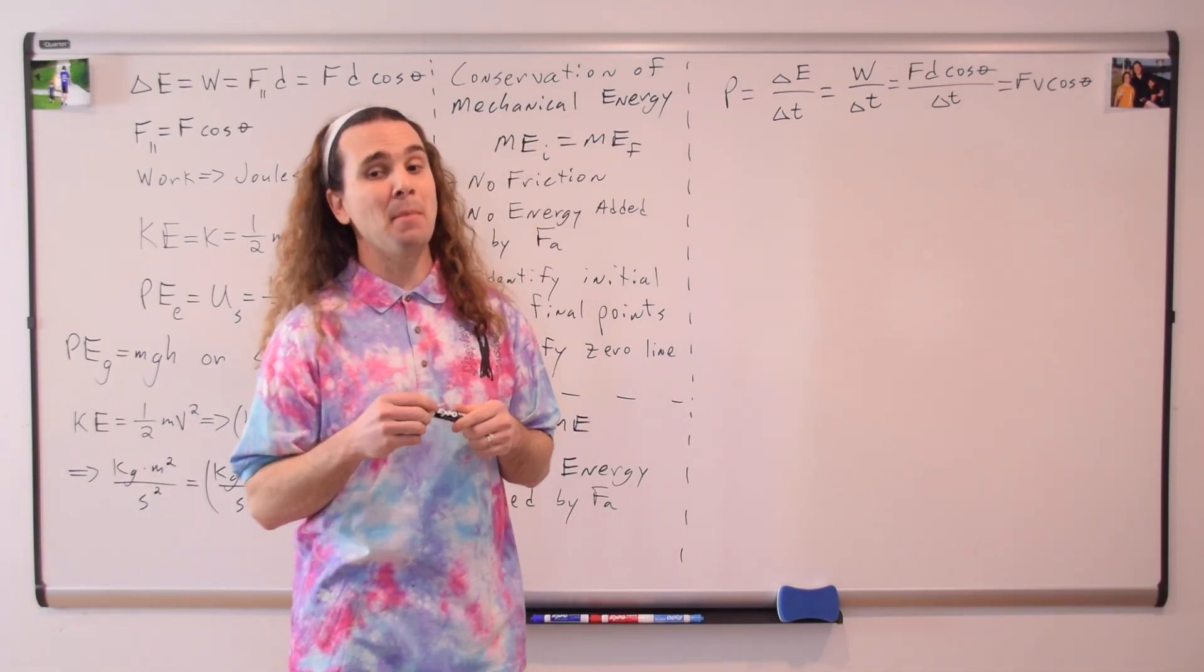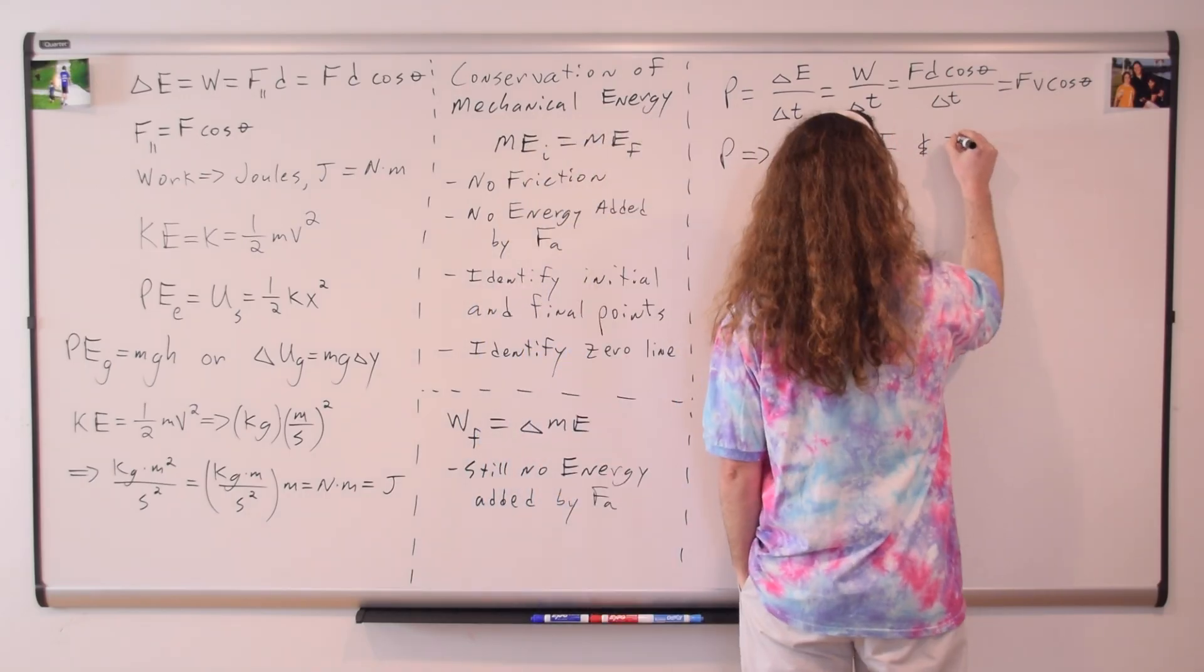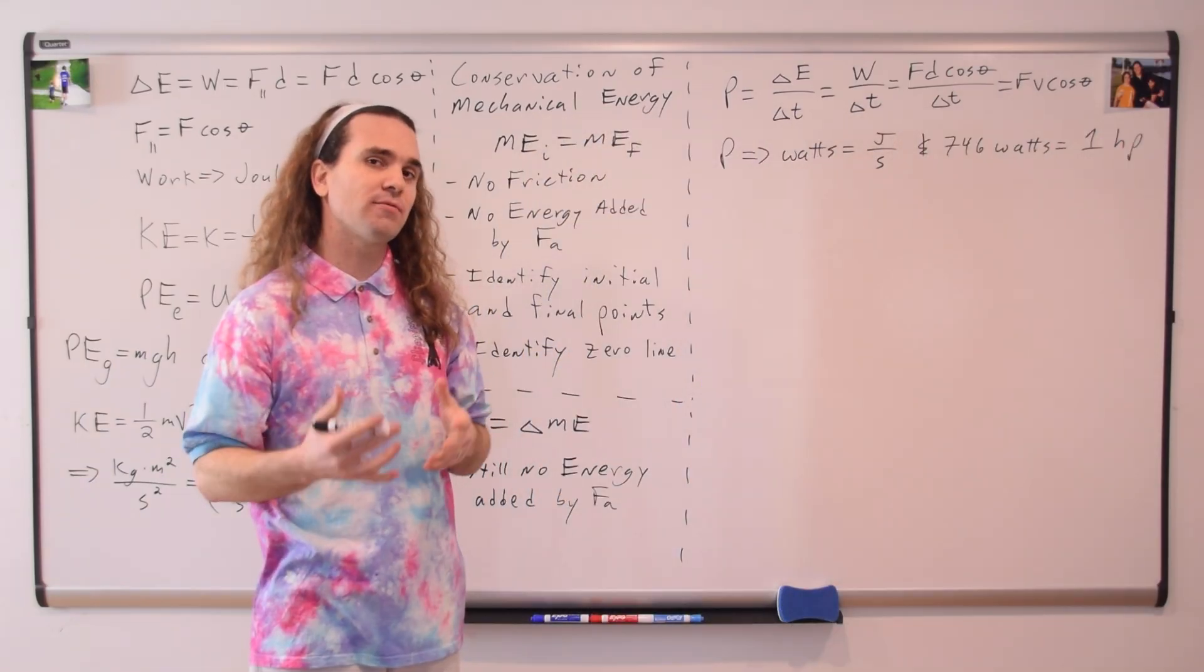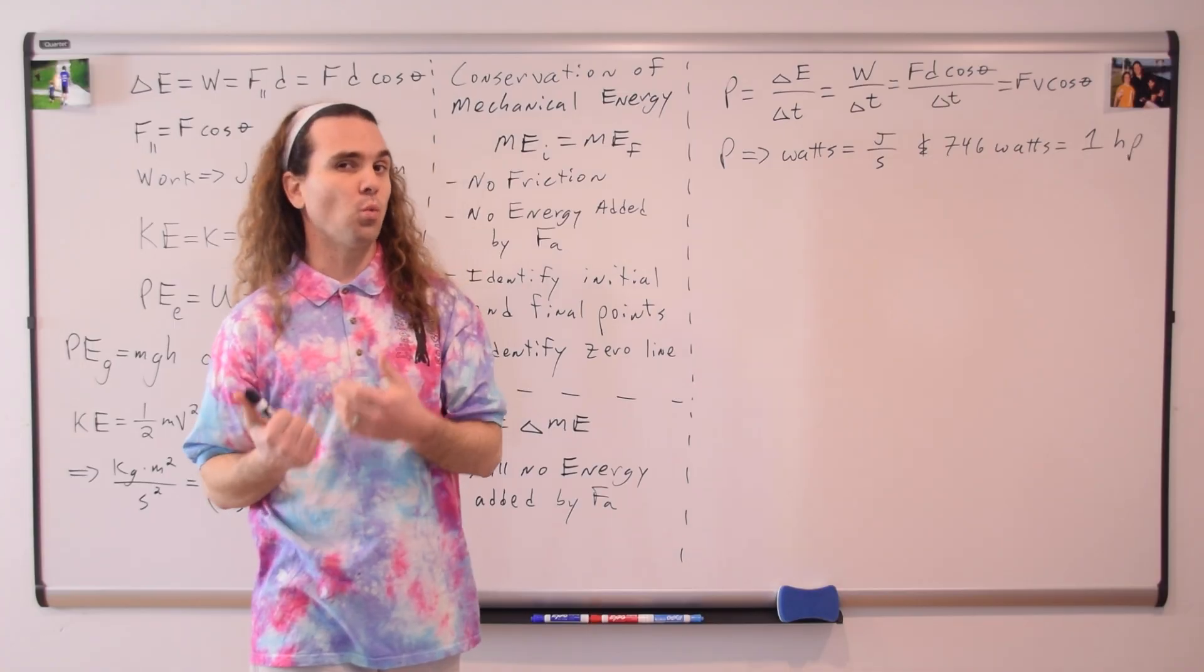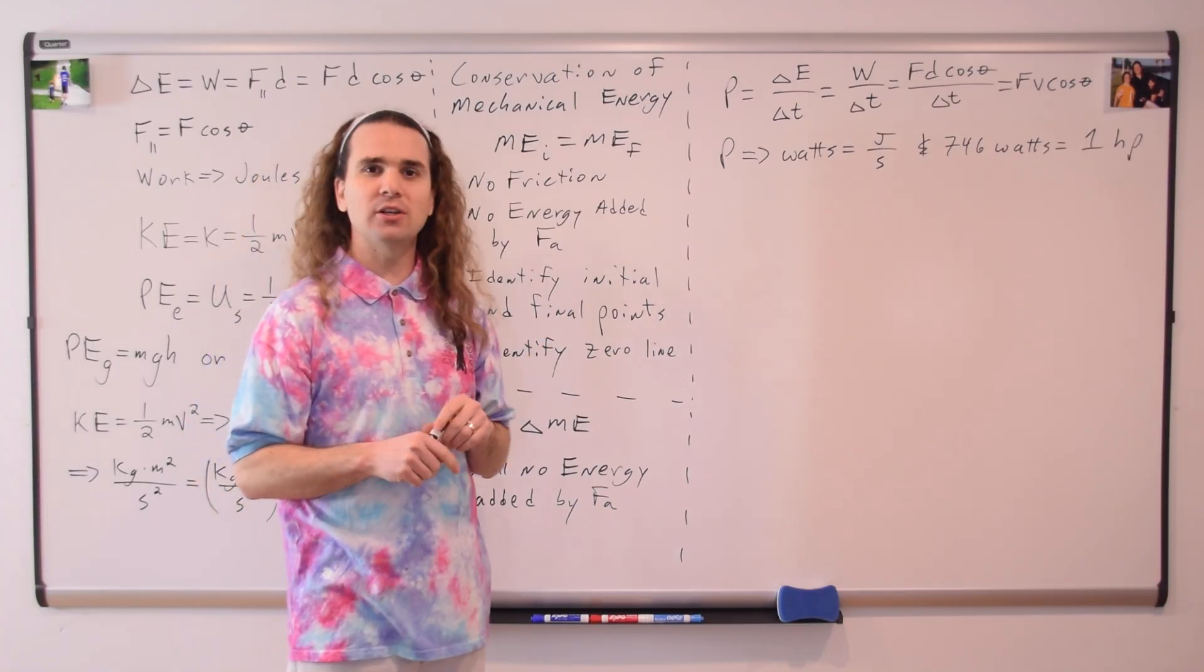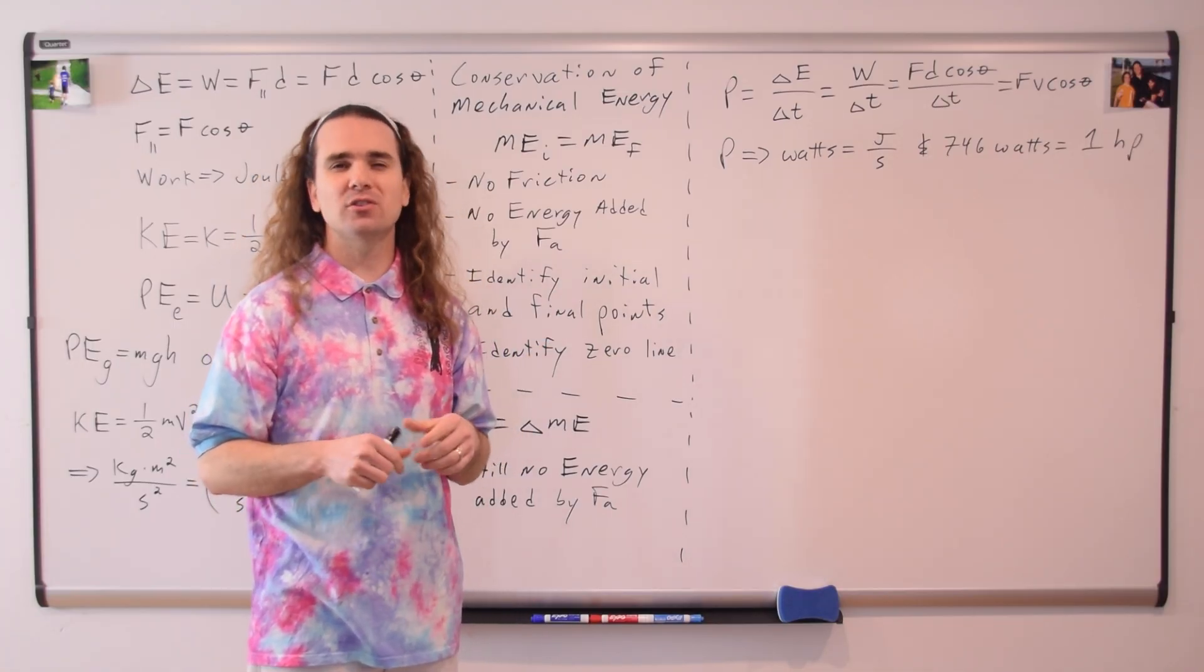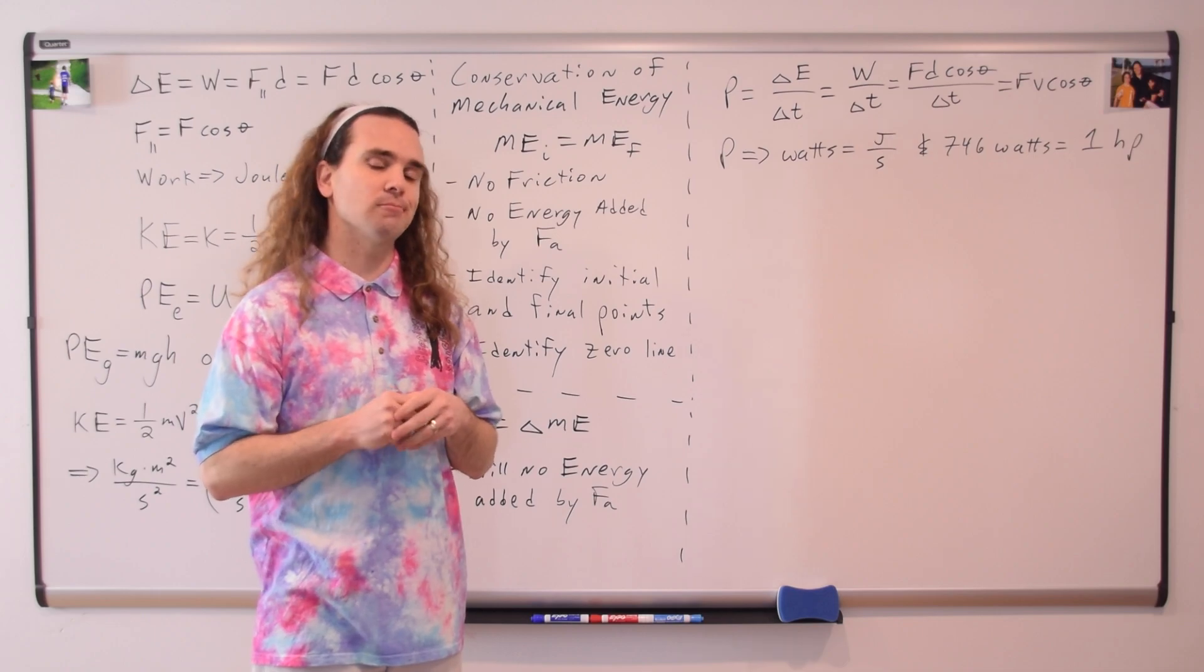Bobby, what are the dimensions for power? Power is in joules per second, which are called watts. Also, 746 watts is equivalent to one horsepower. You certainly don't need to memorize that, however, it's good to be familiar with the term. Now, let's talk about Hooke's Law.